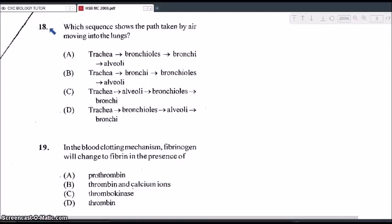Alright, moving on to question 18. Which sequence shows the path taken by air moving into the lungs? So the correct answer for that would have to be B. So the air passes through the trachea or the windpipe, down through the bronchi, so the left and the right bronchi, then to the bronchioles, and then finally to the alveoli which are the air sacs.